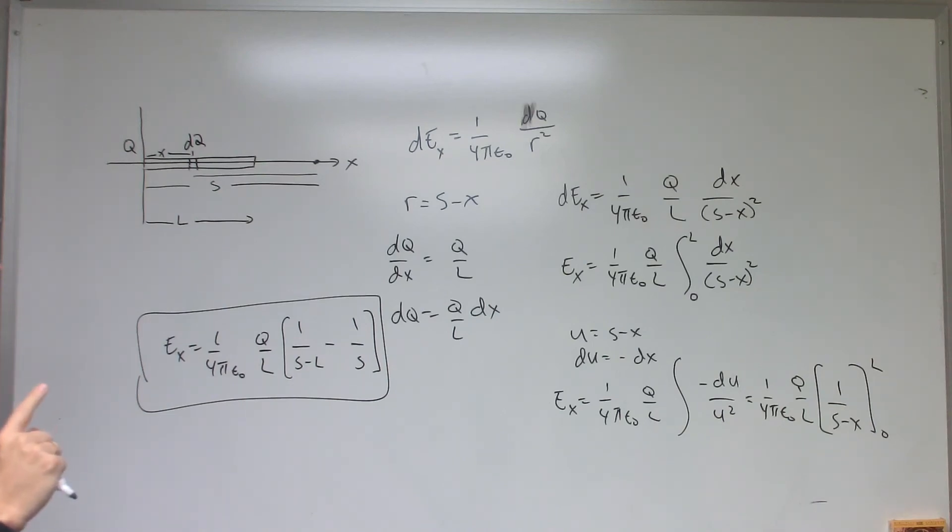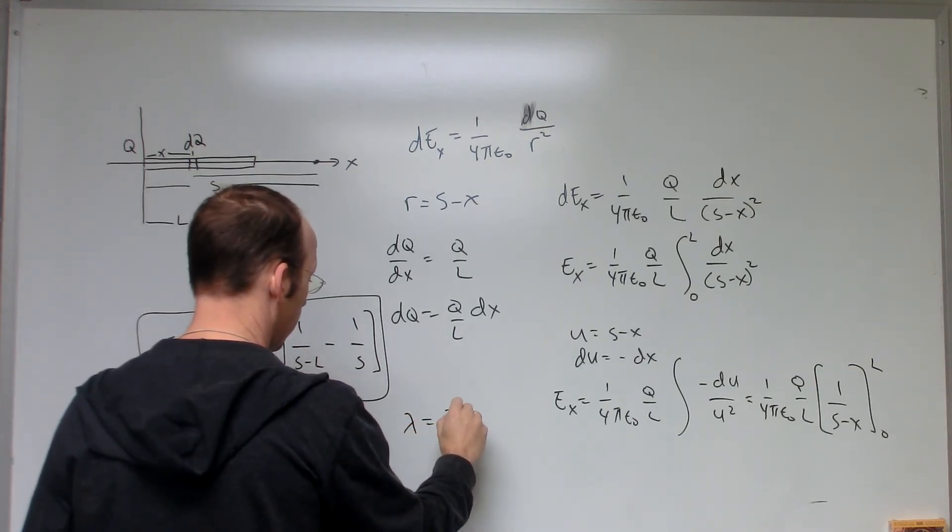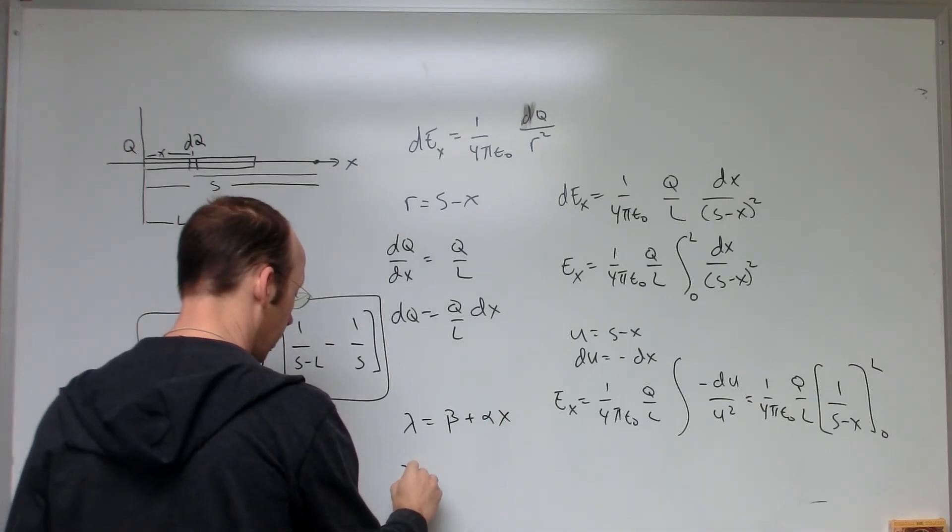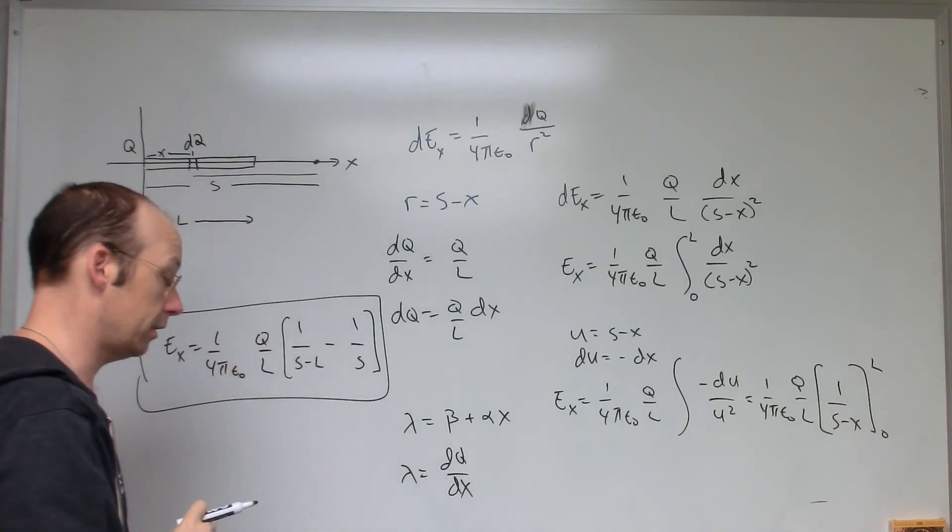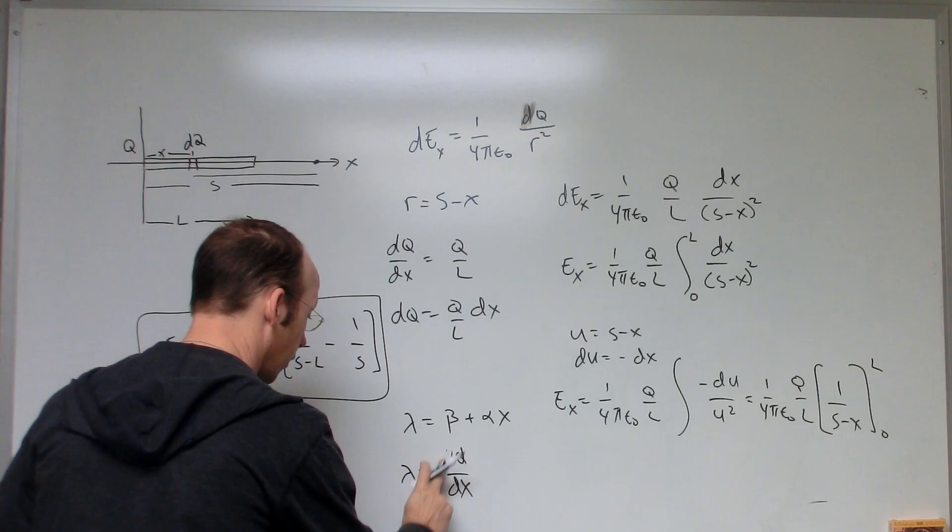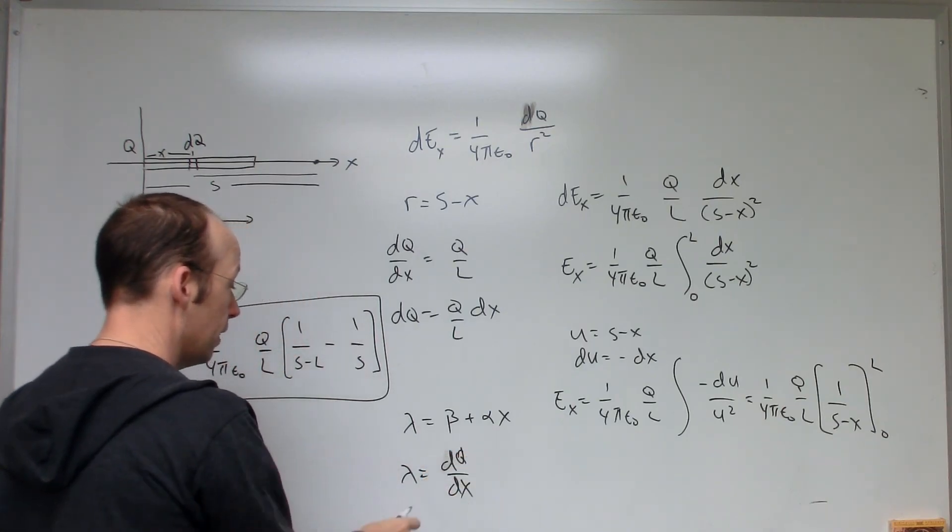Okay, one other thing. What if it does not have a uniform charge density on the rod? What if I say lambda equals beta plus alpha X and lambda is equal to DQ over DX? That's the charge density. Then, in this case, DQ over DX.